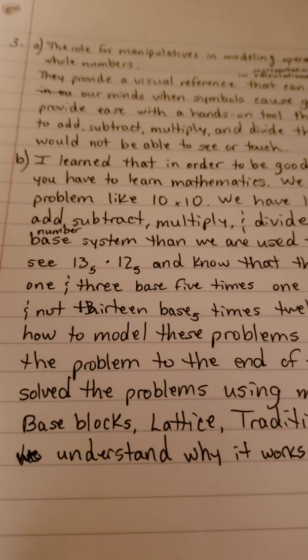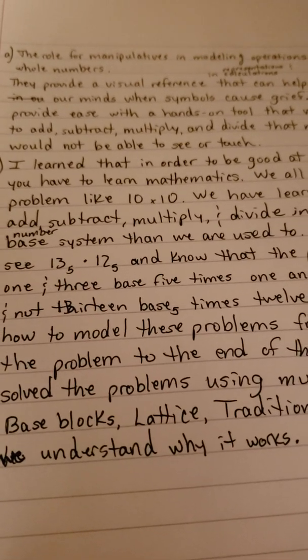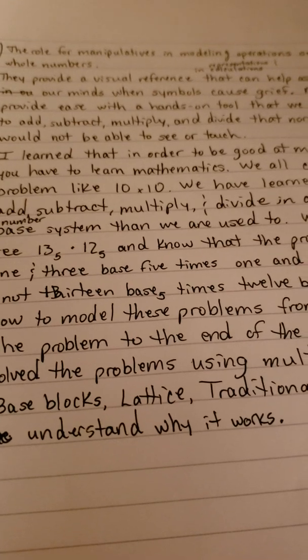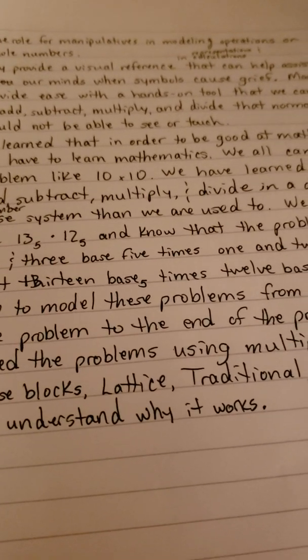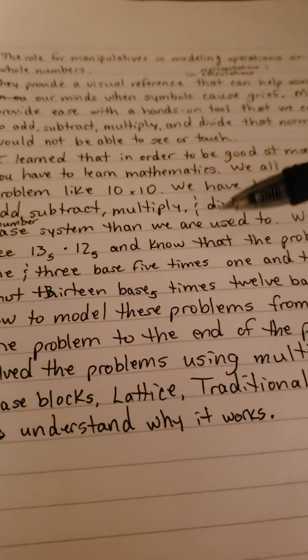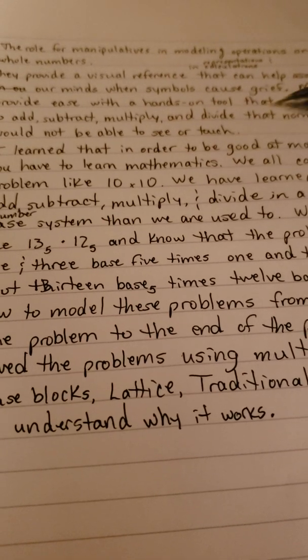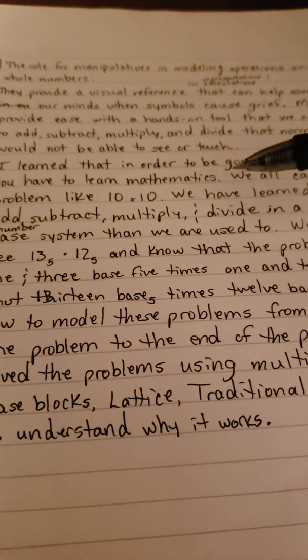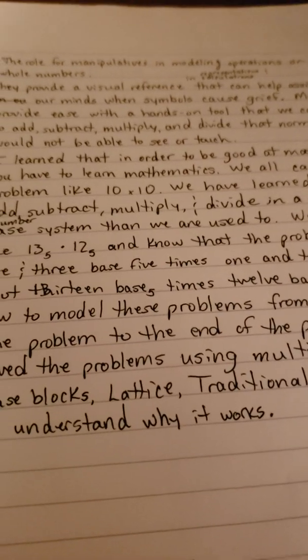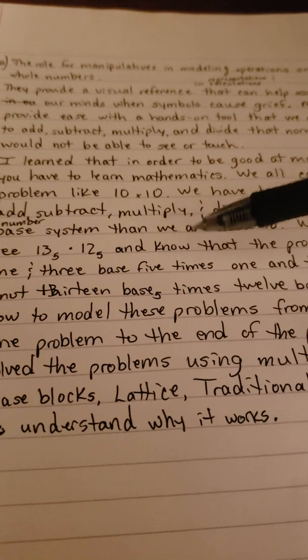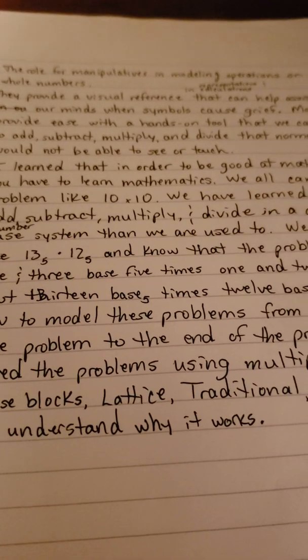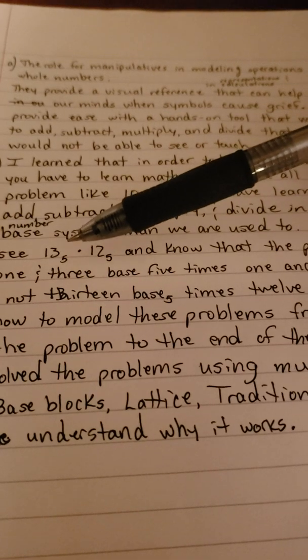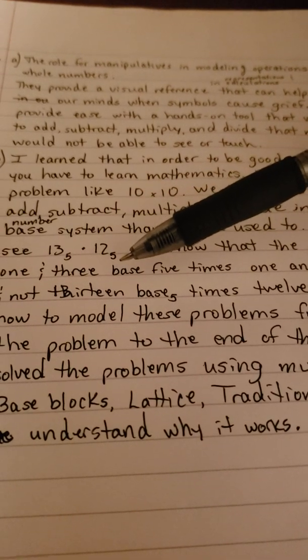What I learned is that in order to be good at mathematics, you have to learn mathematics. I have heard this before and I do believe in it because we can all do a problem like 10 times 10. We have learned how to add, subtract, multiply, and divide in a different number-based system than we are used to. We are able to see 13 base 5, or 1-3 base 5 times 1-2 base 5, and know that the problem reads 1 and 3 base 5 times 2 base 5, and not 13 base 5 times 12 base 5. It's just understanding that this is not 13, this is not 12, and the reason why is because this is in base 5.